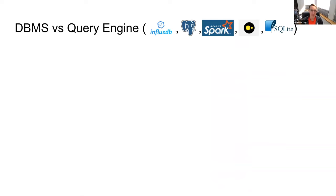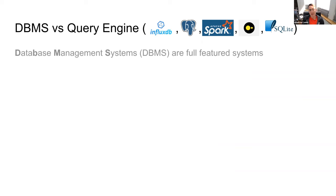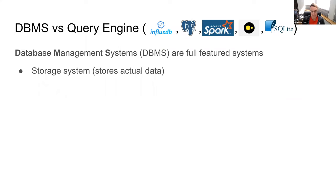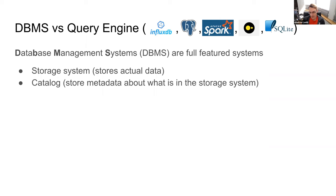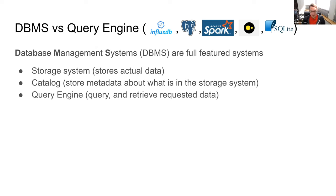I want to make a distinction between database systems and query engines. Database systems are things like InfluxDB, Postgres, Apache, DuckDB, Apache Spark, SQLite — there are lots of database management systems. DataFusion is not a database management system; it's a query engine. A DBMS — database management system — has a system to actually store the data, has some way of storing information about where the data is, typically called a catalog. It has a query engine, which is what most people think of when they interact with a database.